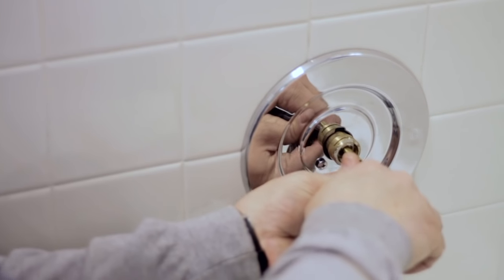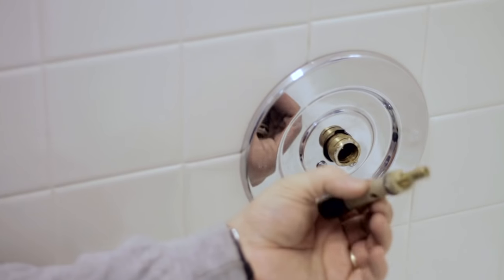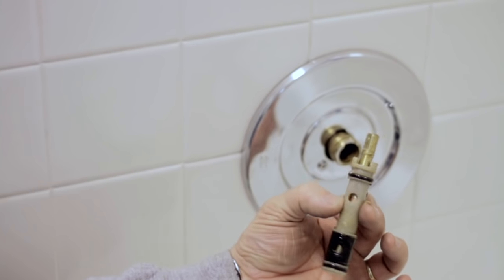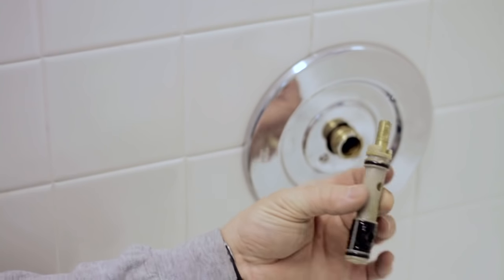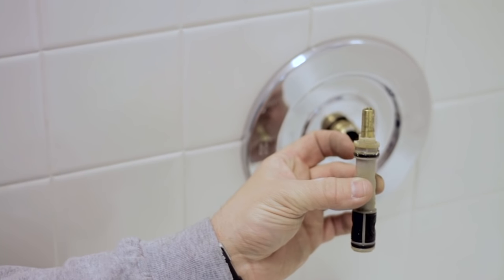And then you'll be able to remove the cartridge itself. Now this particular cartridge pulls out. You can then take this down to the supply house, pick up a new one, and this will fix your leaky faucet.